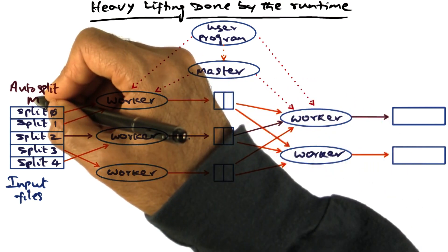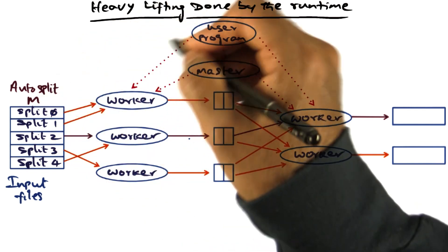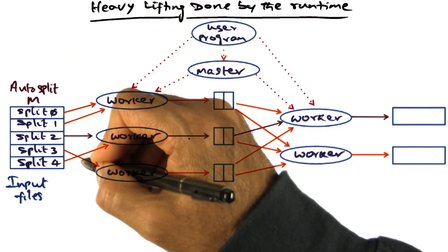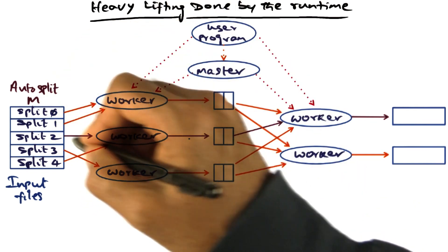In any case, once m is specified or automatically determined by the programming framework, it splits the input key value space into m splits.